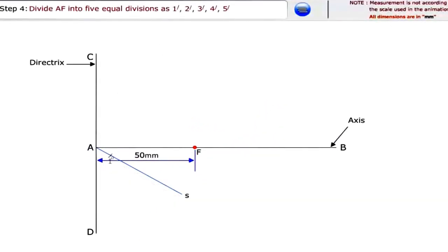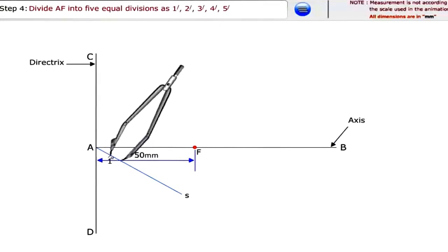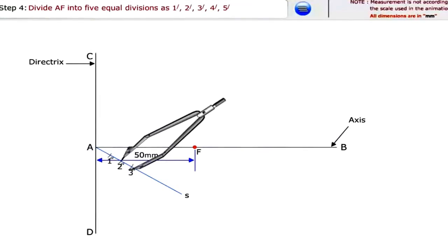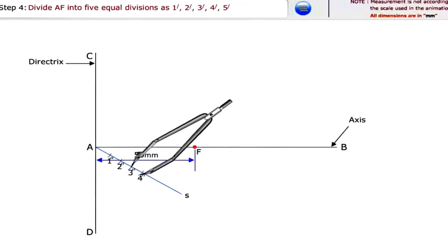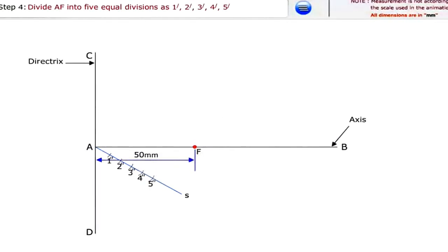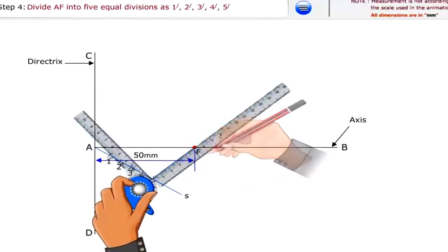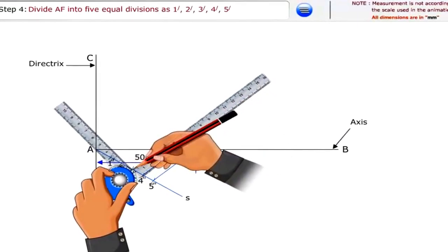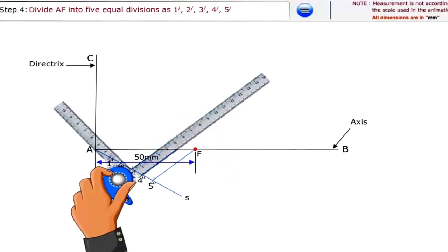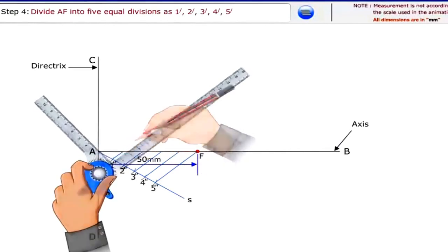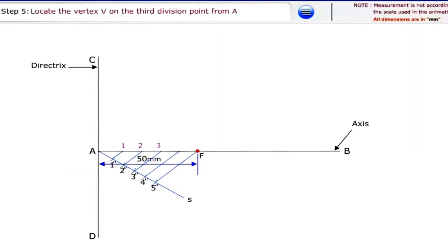Divide A F into 5 equal divisions and locate the vertex V on the third division point from A.